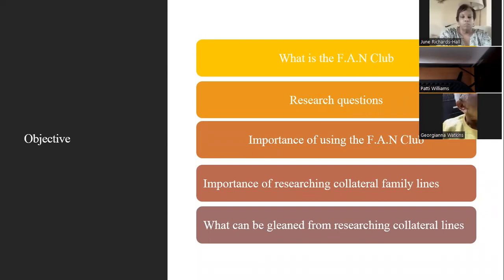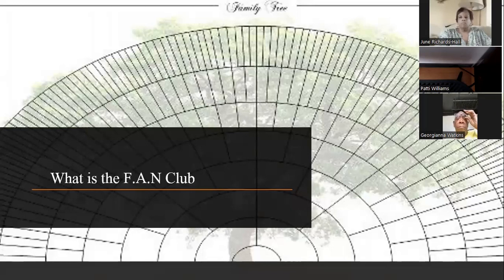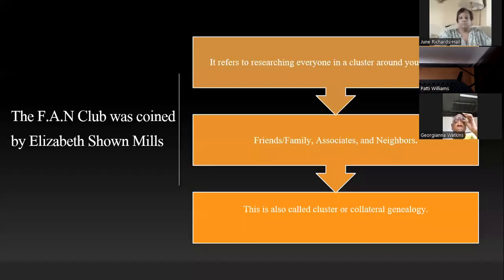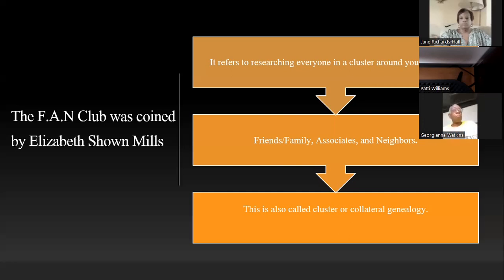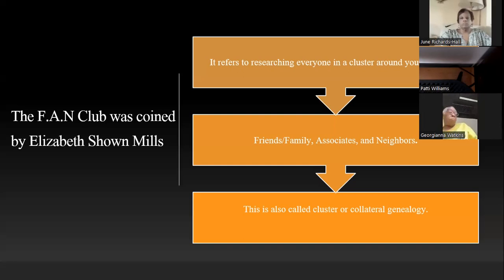A lot of people when they hear us talk about the FAN club wonder what it is. The FAN club was coined by Elizabeth Schoen Mills and it refers to researching everyone in a cluster around your ancestors — your Friends, Associates, and Neighbors. This is also called cluster or collateral genealogy. A lot of people just focus on their direct line, but it's very important that you do collateral or cluster genealogy because it opens the door to so much more and can help you break down brick walls in your research.